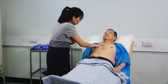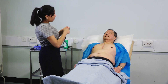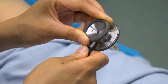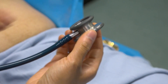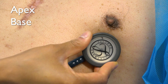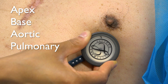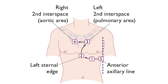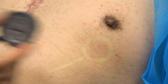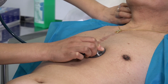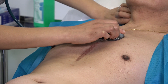Now auscultate the heart. Listen with both the bell and the diaphragm of your stethoscope at the apex, base, aortic and pulmonary regions. Start with the bell at the apex, then switch to the diaphragm for the other cardiac areas. Start by listening to the heart sounds. To help you differentiate between the heart sounds, they should be timed against the carotid pulse.